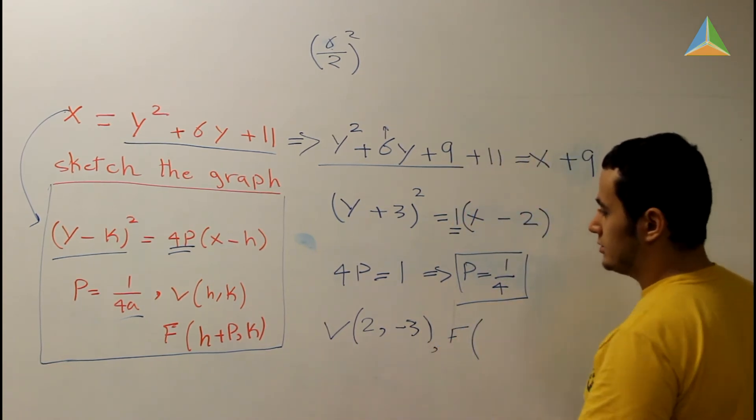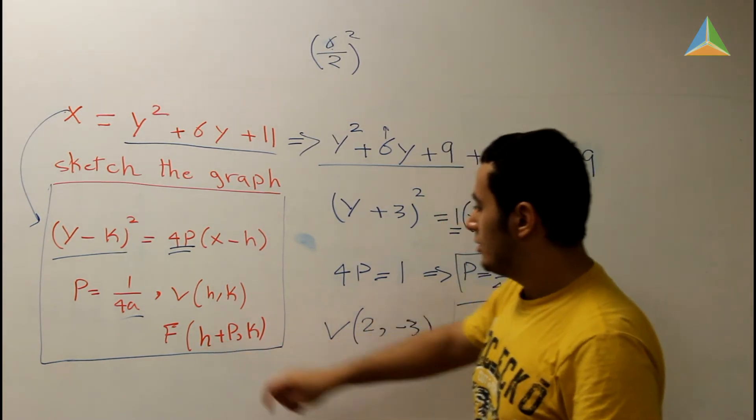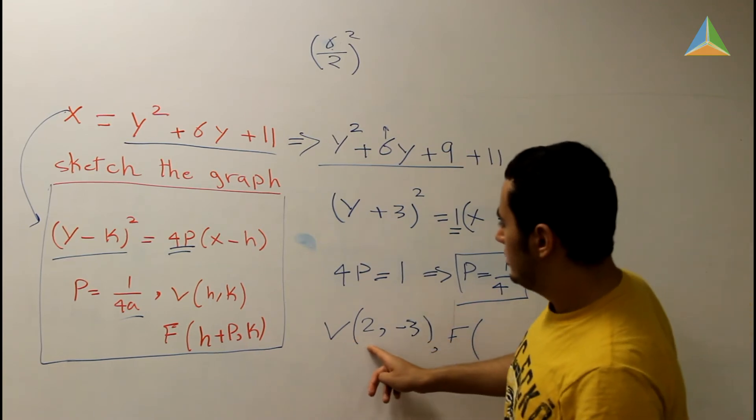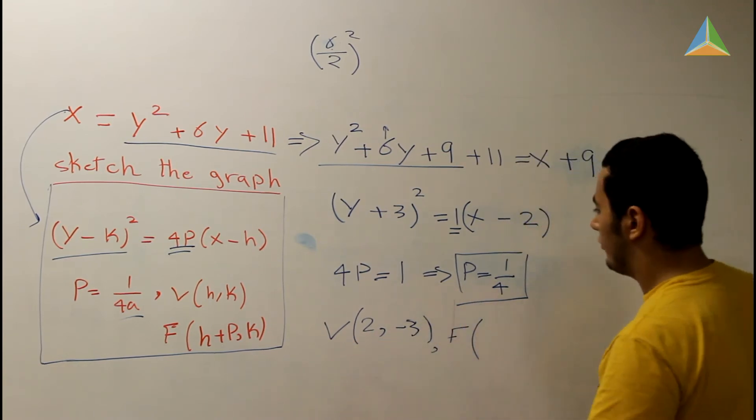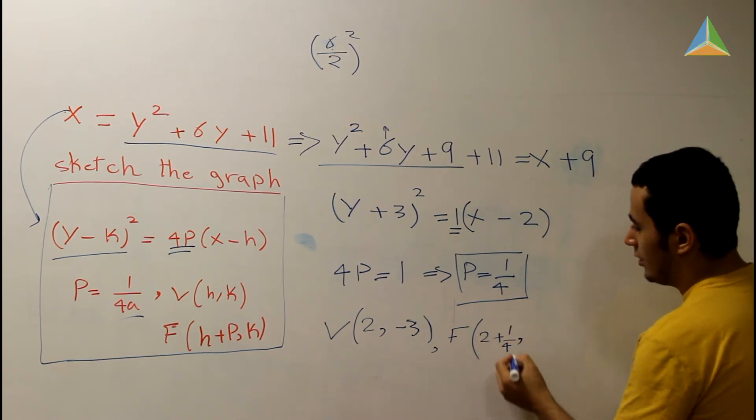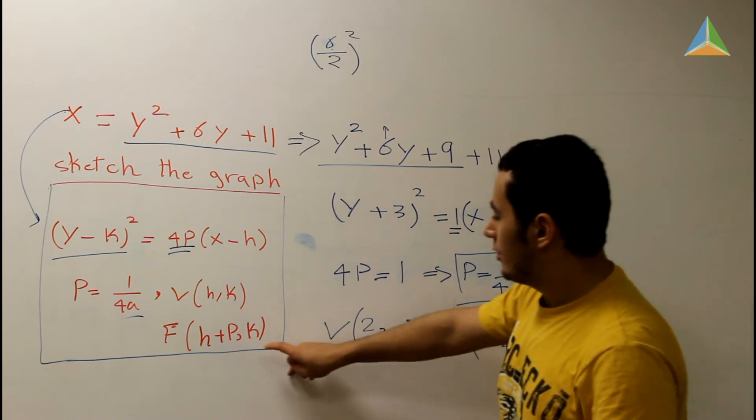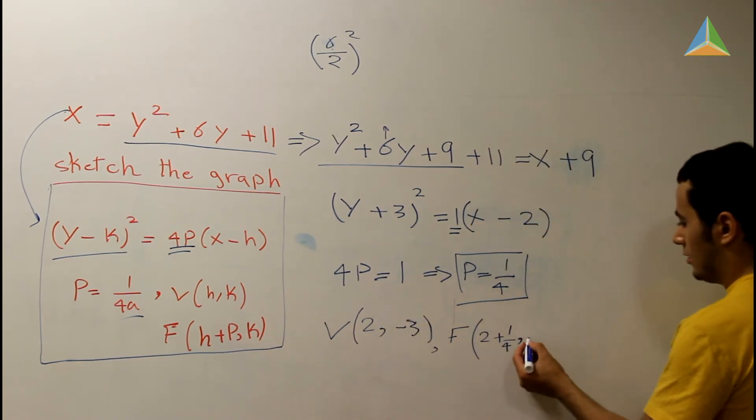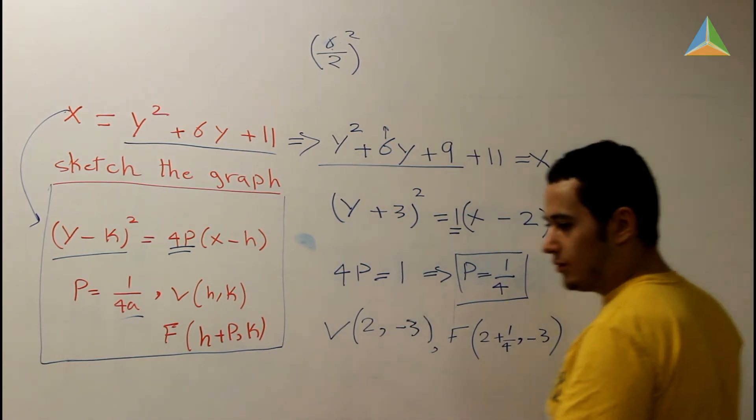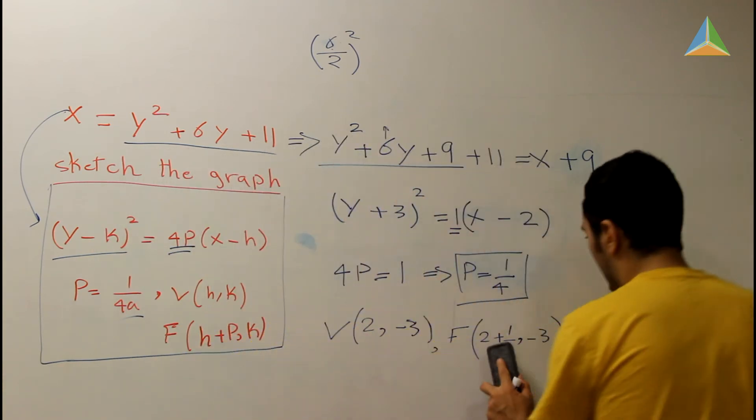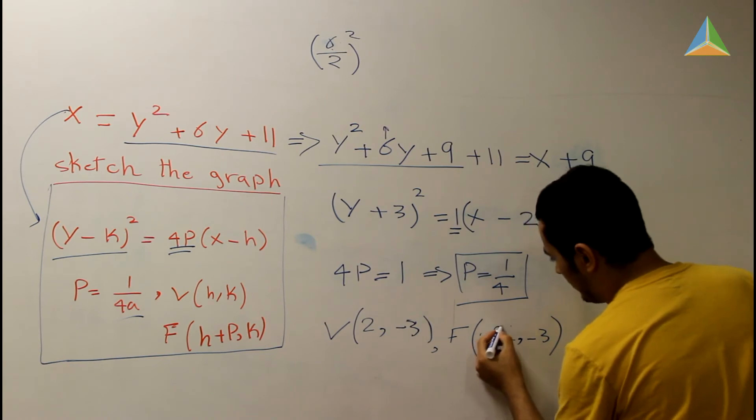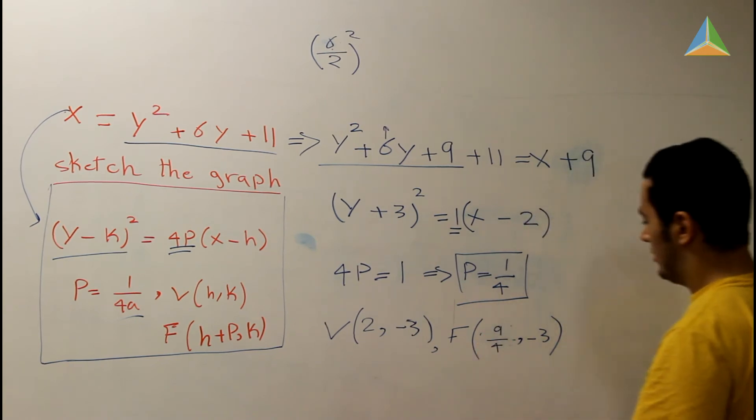And finally, the focal point is going to be (h + P, k), which is going to be h. We know our h is 2 plus P, which is 1/4. So it's going to be 2 + 1/4. And we know that our value k is -3. This is our equation, and we can simplify this more. This is going to be, everything is going to be over 4, and this is going to be 9/4. Sounds good.